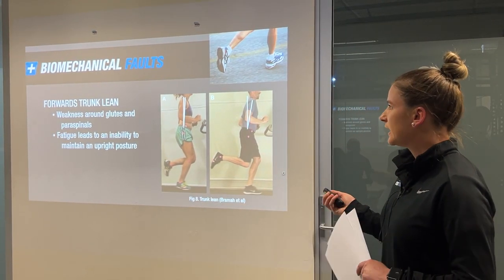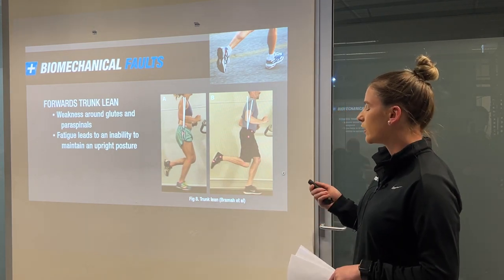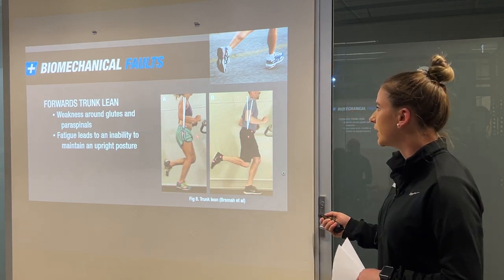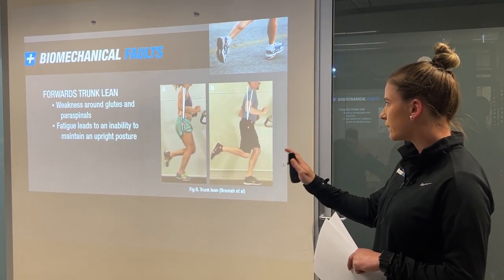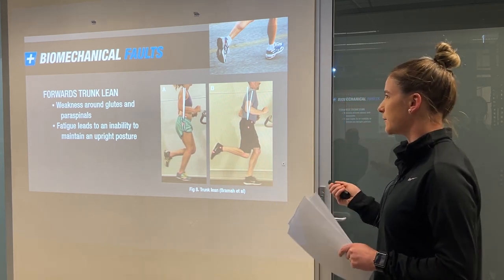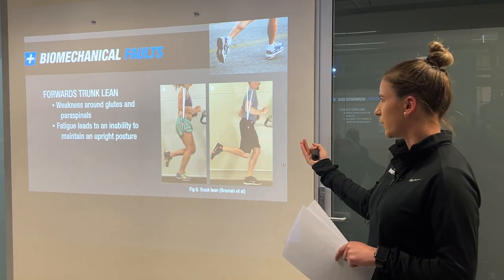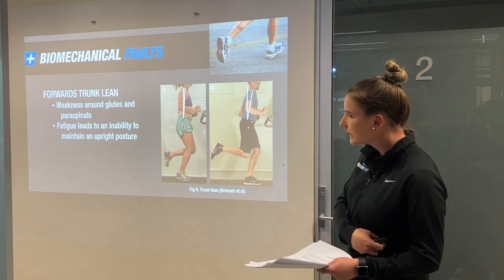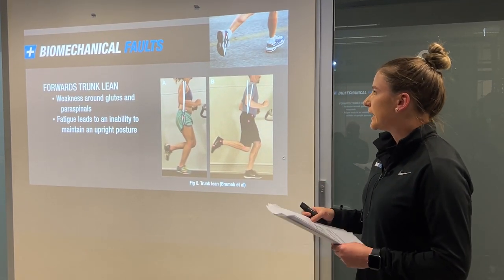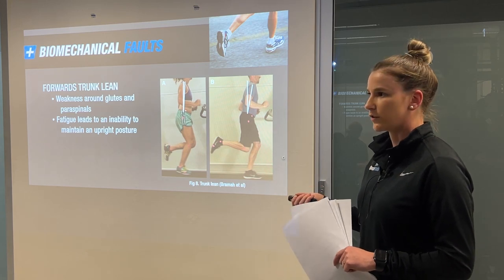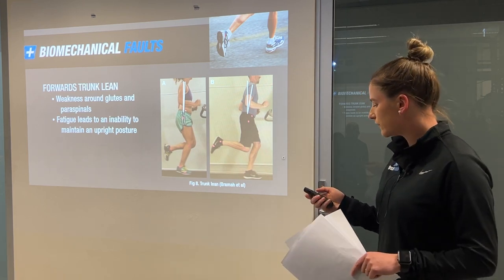The final biomechanical fault is forward trunk lean — specifically excessive forward trunk lean. Generally, we want a reasonably upright posture when running, around 5 to 10 degrees of lean being acceptable, as demonstrated in figure A. In figure B, this gentleman's head and shoulders are much further forwards, affecting running efficiency and potentially leading to injury. Forward trunk leaning commonly occurs due to an inability to control upright trunk position — often from weakness in paraspinals, core, or glutes.